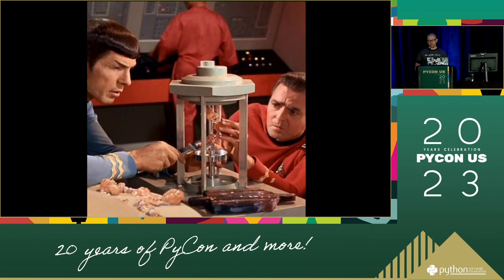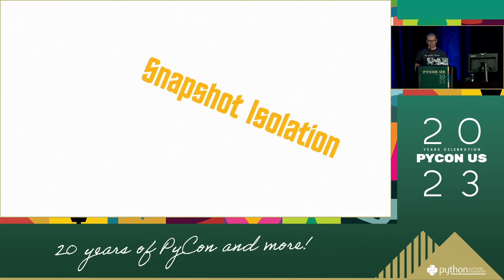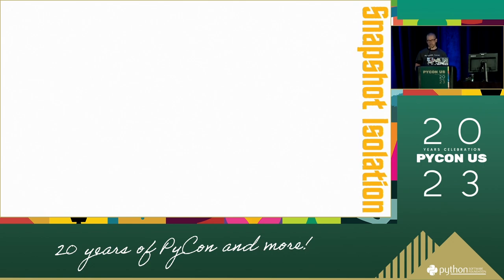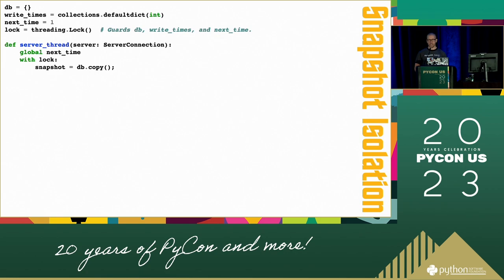So let's fix the problem. We need a stronger isolation level like snapshot isolation. This is going to be a lot of code — this is going to be the worst slide. To start off, we need some more global state, and we'll see in a minute how all of this is used. When a server thread starts up, it gets the lock — that lock protects global state like the DB — and the local transaction makes a copy of all the data into a local snapshot.